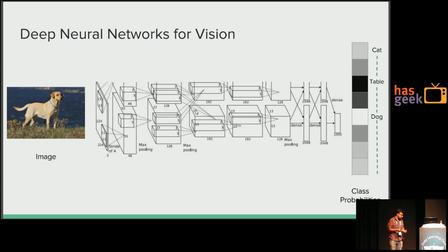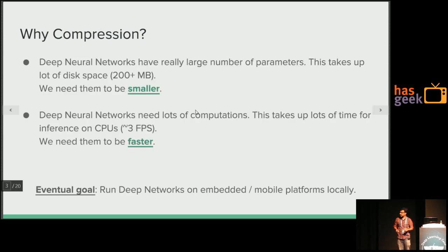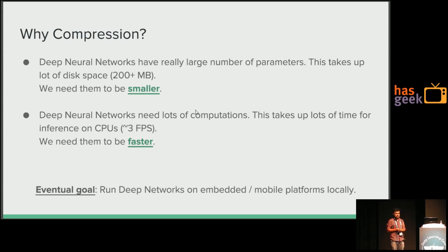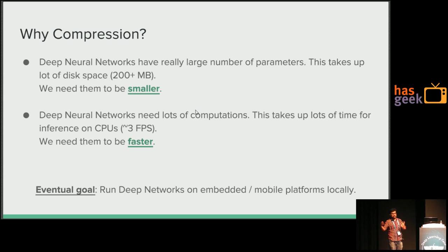Although these networks work very well, they're really too big and too slow. The question is how do you make them smaller? We call this problem model compression. You take a deep learning model and you compress it. Deep neural networks have a large number of parameters — the network we saw took about 200 MB of disk space, which is really large for mobile devices, and it runs at about three frames per second on a mobile CPU.